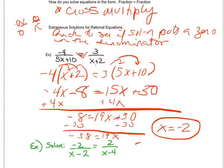I have to check my solution to make sure it doesn't put a zero in my denominator. So I check: does 5 times negative 2 plus 10 equals 0? Since it does, this will not work. It is an extraneous solution.